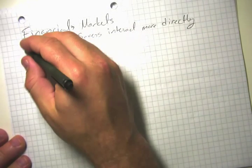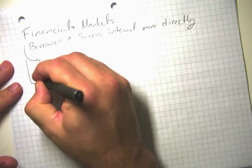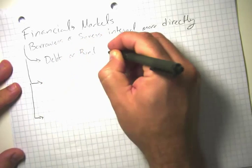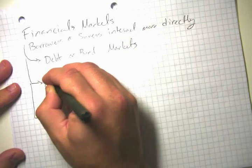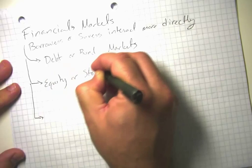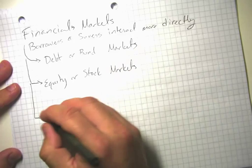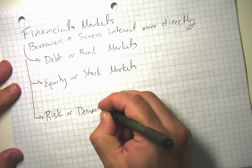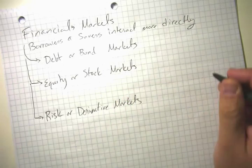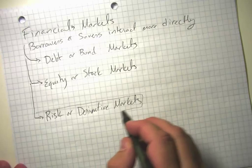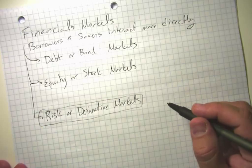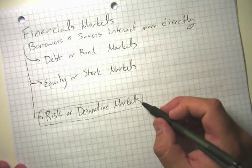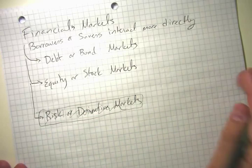These are going to fall into a couple of main categories: debt or bond markets, equity or stock markets, and risk or derivative markets. We're going to leave risk or derivative markets almost entirely out of this course because they're really, really complicated. We can talk about them a little bit later once we start talking about risk, risk aversion, expected losses, and so on — but that is not part of this series of lectures right now.